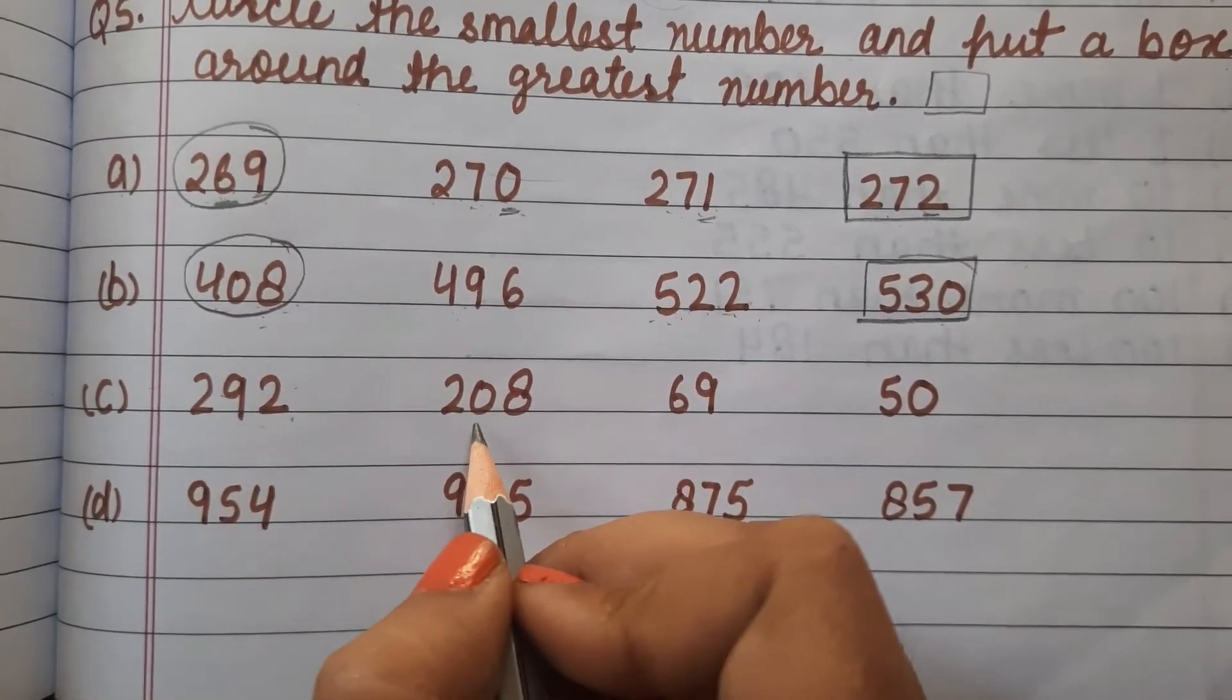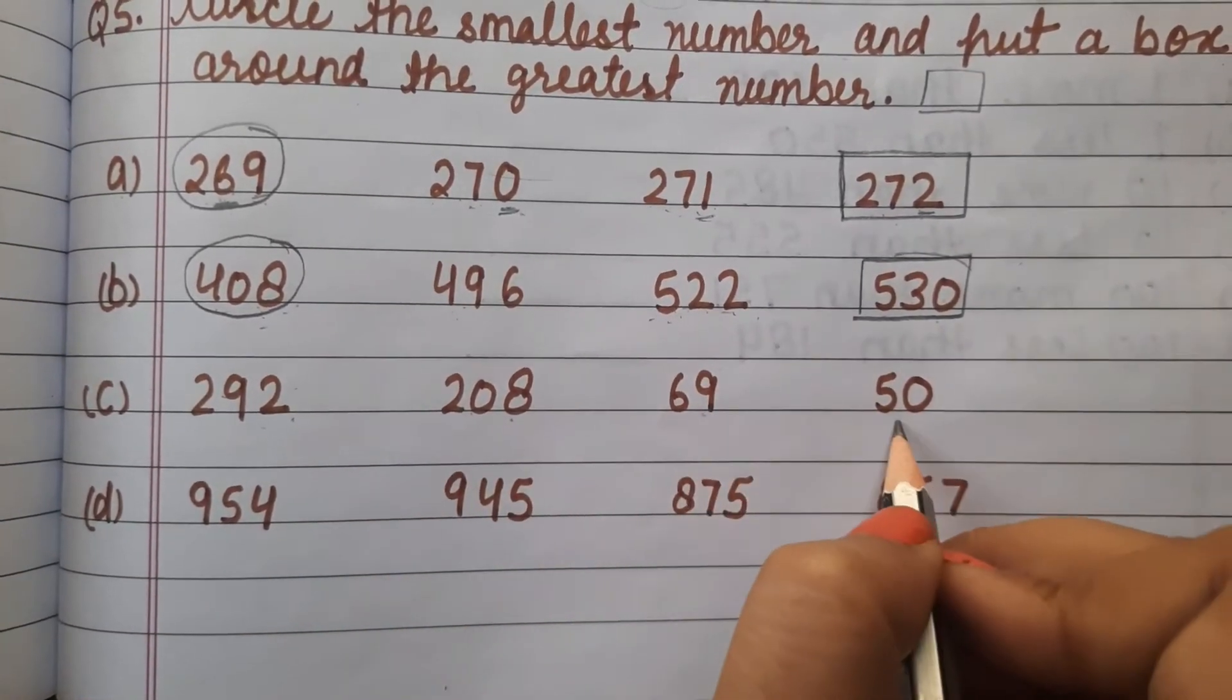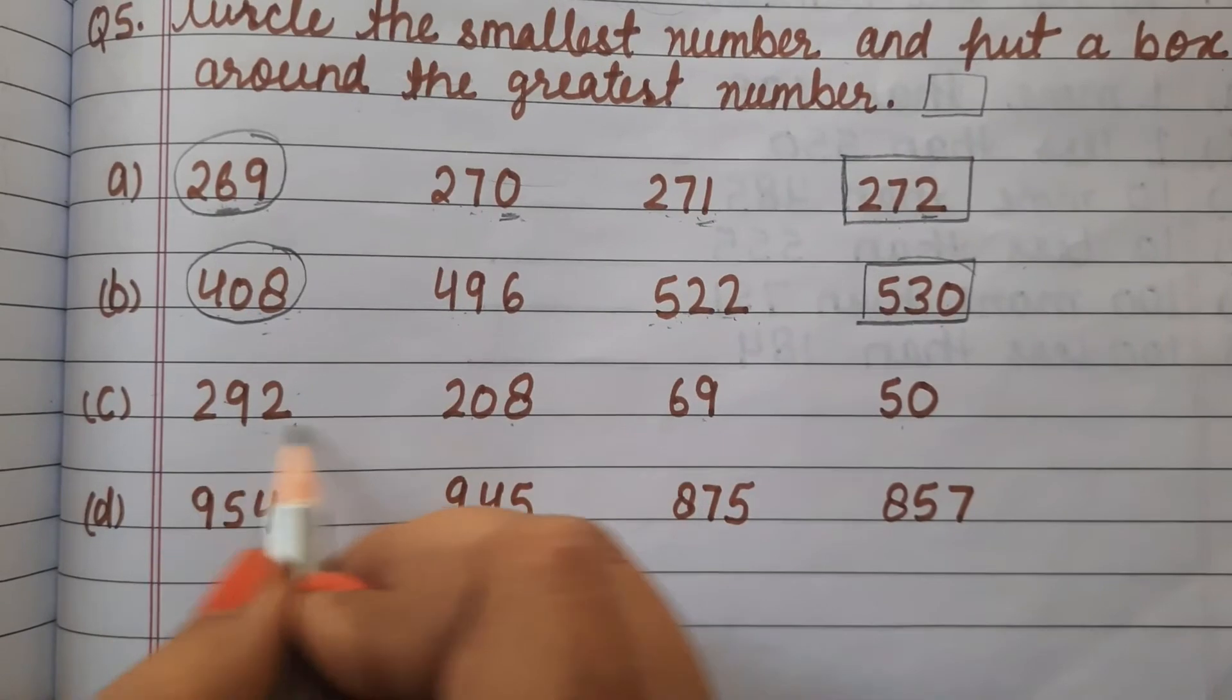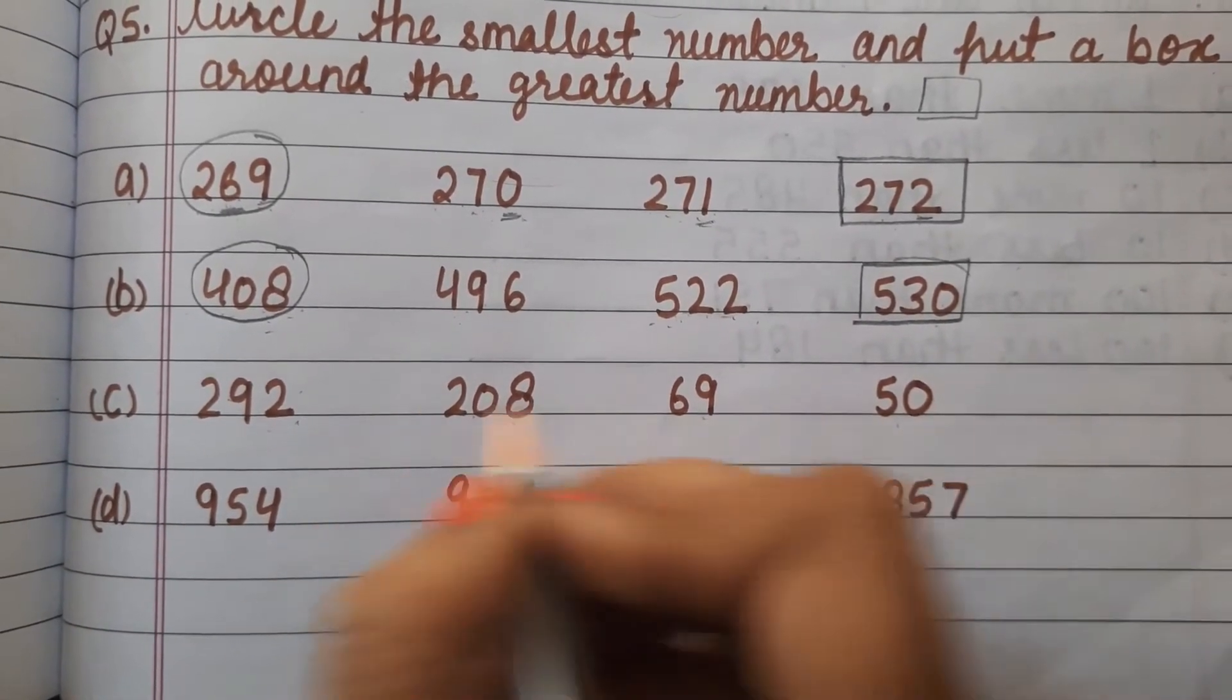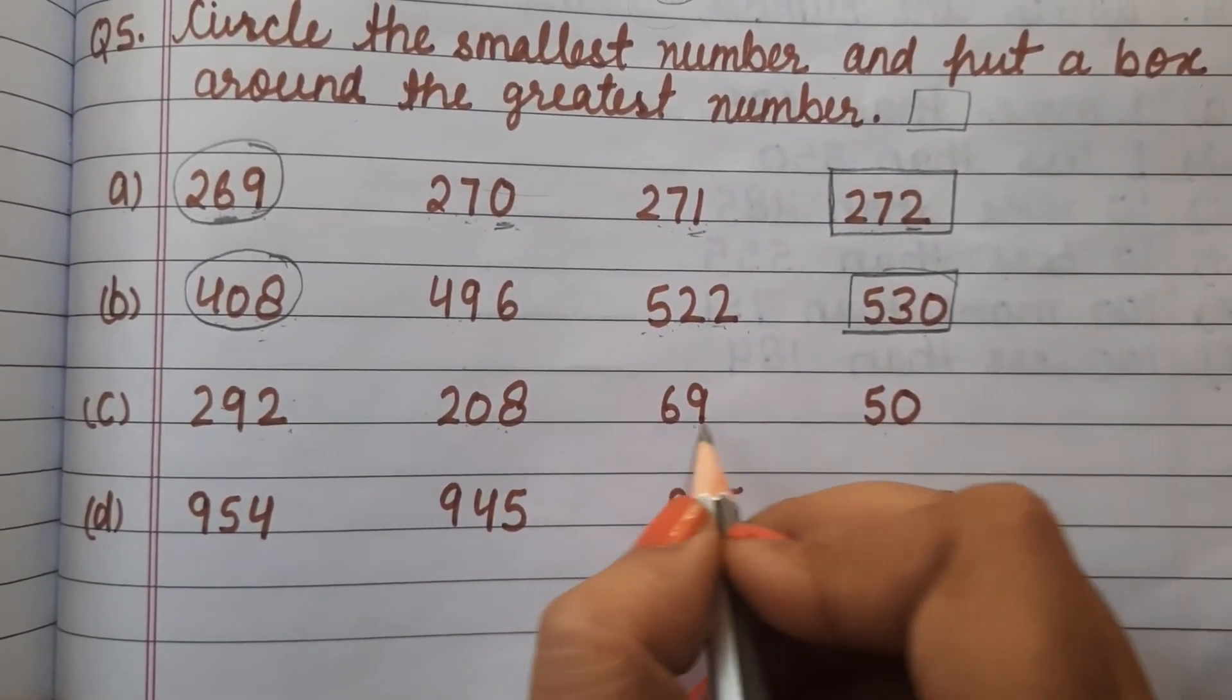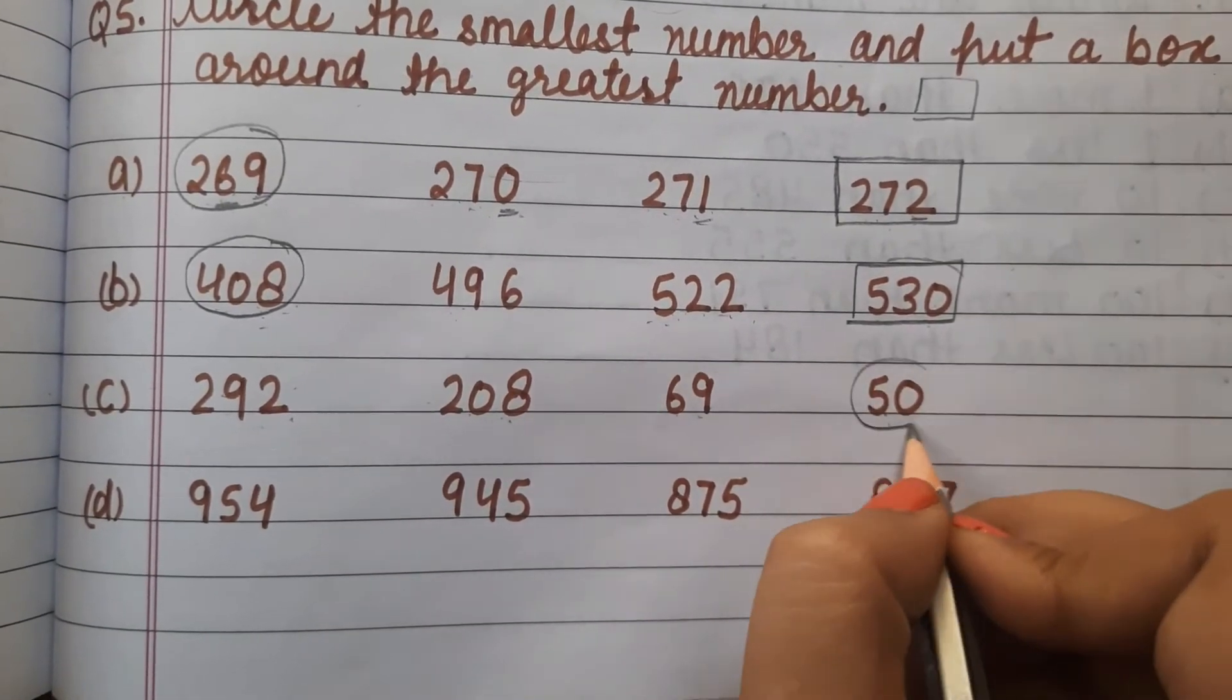Part (c): 292, 208, 69, and 50. The smallest number is obvious here - between 69 and 50, it will be 50. Correct, 50 is the smallest.